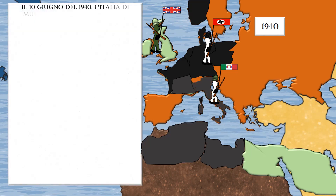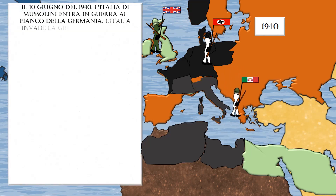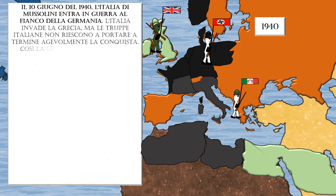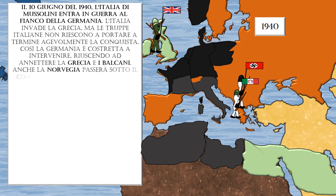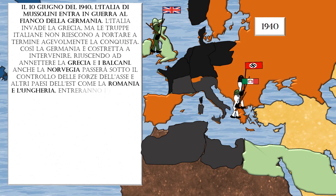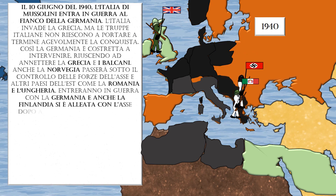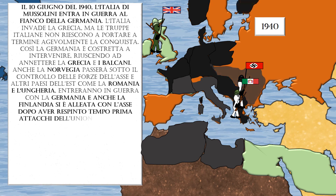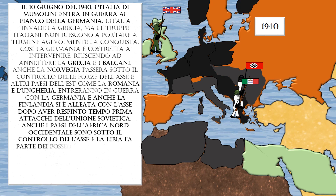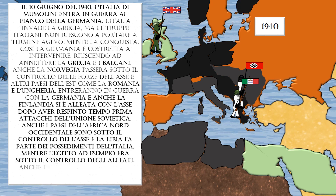On June 10, 1940, Italy entered the war on the side of Germany. Italy invaded Greece, but Italian troops failed to smoothly complete the conquest. Thus Germany was forced to intervene, managing to subdue Greece and the Balkans. Norway also came under Axis control, and other eastern countries such as Romania and Hungary joined the war alongside Germany. Finland also allied with the Axis, after repelling earlier attacks from the Soviet Union.